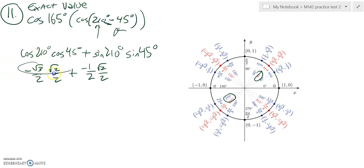After some arithmetic, that's negative root 6 over 4 plus negative root 2 over 4.